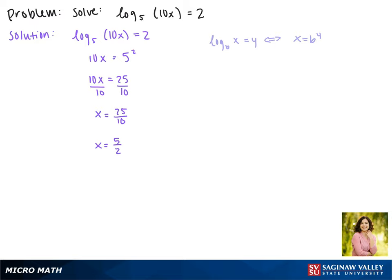Now let's make sure that this solution is not extraneous so we're going to plug it back into our equation. Our solution would be extraneous if we had to take the log of a negative number since that is undefined. So looking at the argument of our log we have 10 times 5 halves which is positive so this solution is not extraneous. 5 halves is the solution to our equation.